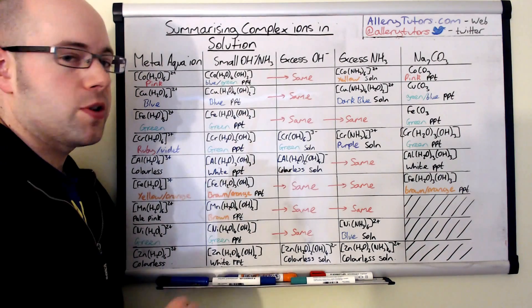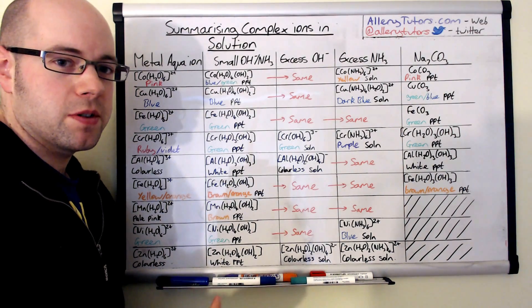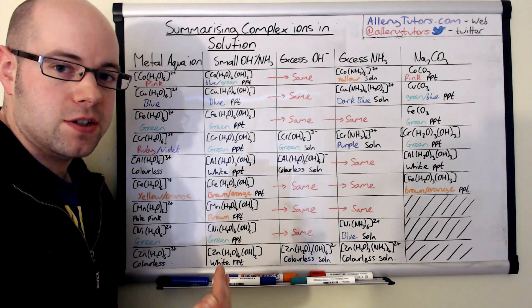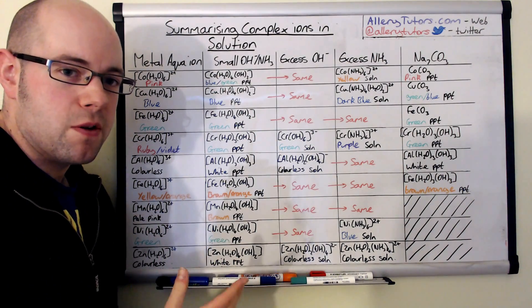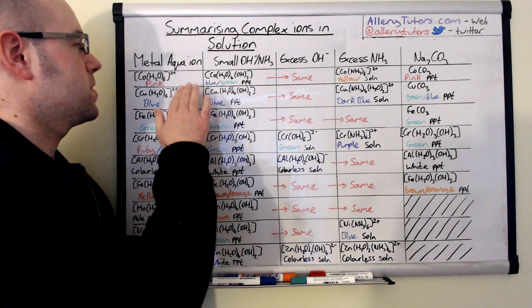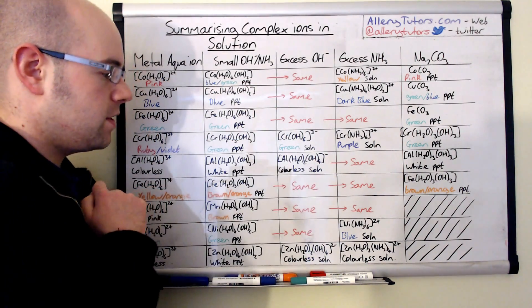Okay so if we go further on to the excess hydroxide, when we add excess what we're doing is we have a ligand substitution. Now with a lot of the complexes there is no further change, so for example the cobalt, copper and the iron 2+ ions, they have no change.